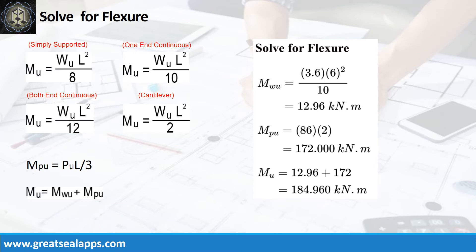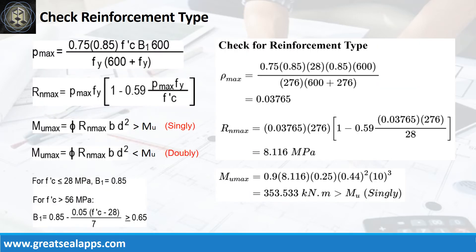Given factored uniform load of 3.6 kN per meter, factored concentrated load of 86 kN, and L equals 6 meters, the maximum moment from concentrated load is 12.9 kN·m, for a total maximum design moment of 184.96 kN·m. The ρ max from the given design criteria is 0.6, then RN max is 8.116 MPa, and MU max equals 353.533 kN·m — greater than 184.96 kN·m — confirming singly reinforced beam design.